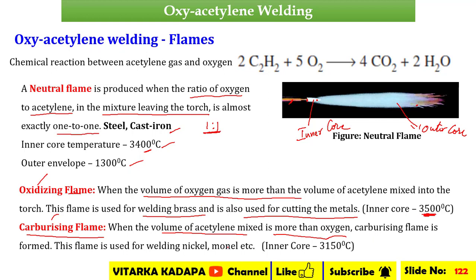The carburizing flame, where acetylene content is higher, is used for welding of nickel and monel alloys, which are difficult-to-cut materials. The inner core temperature of the carburizing flame is 3150 degrees Celsius.